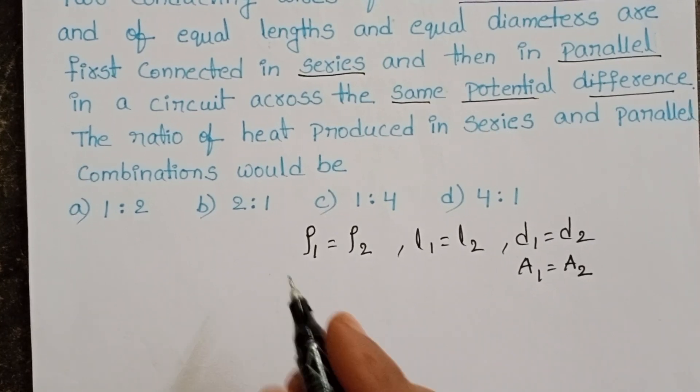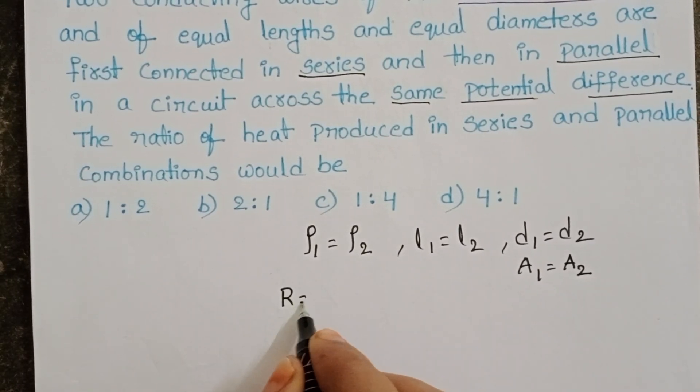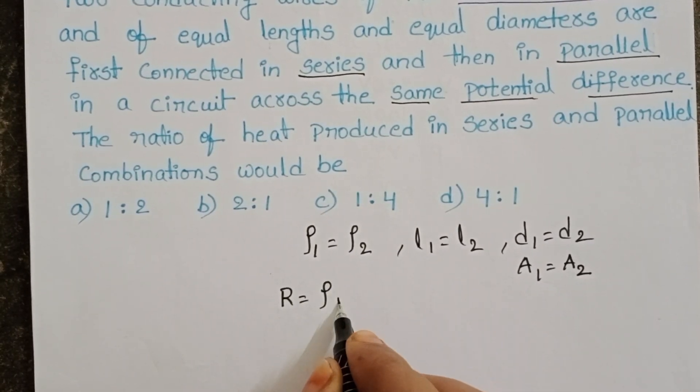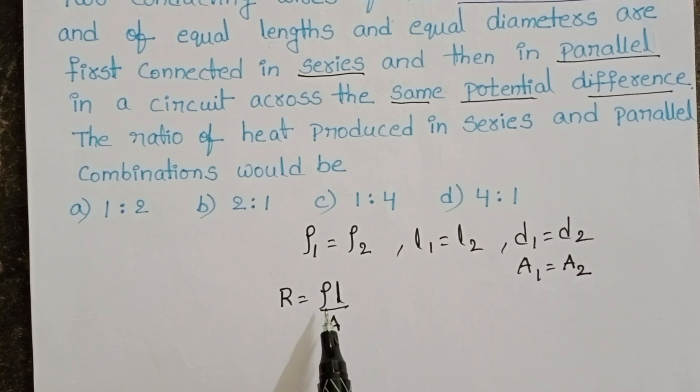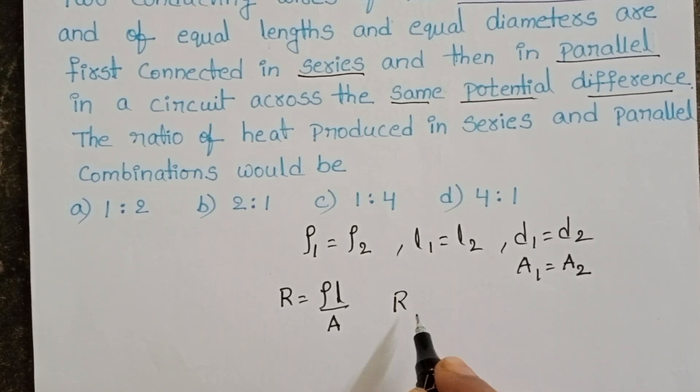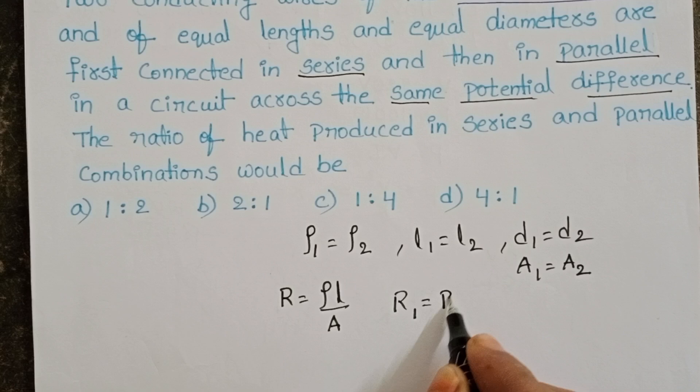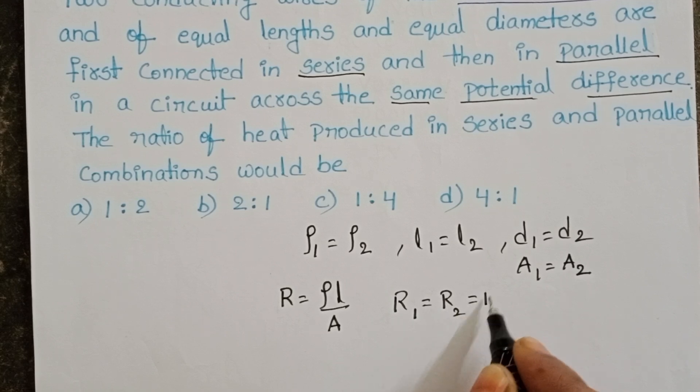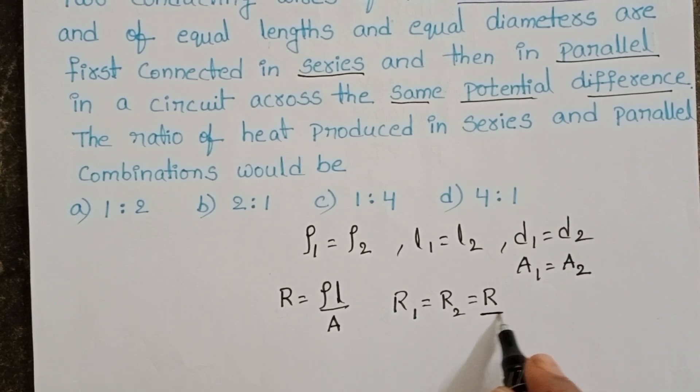We know the formula of resistance. Resistance equals to resistivity into length by area of cross section. Here resistivity, length and also area, these three are same. Then what about the resistance of the two wires? Same. R1 equals to R2. Let it be R. Resistance of each wire is R.